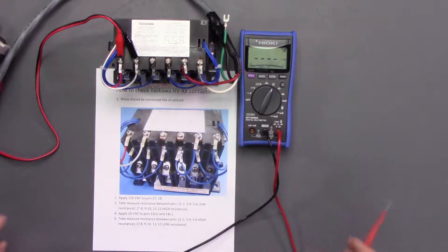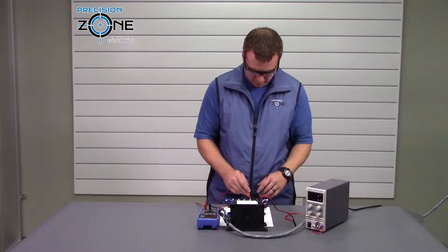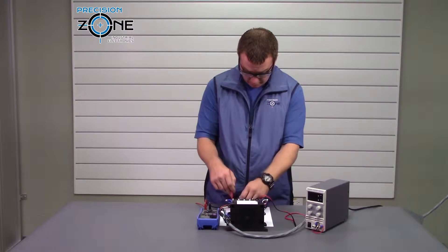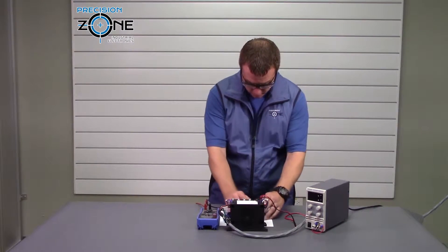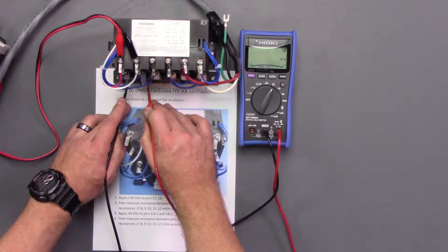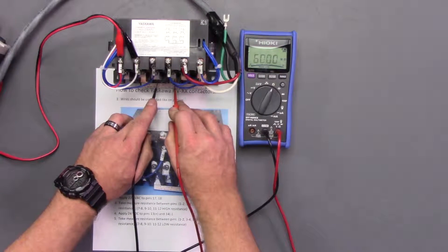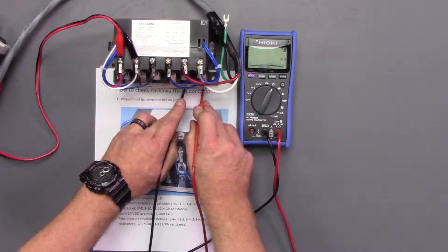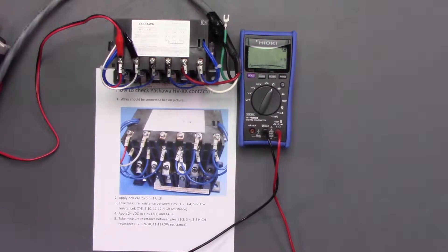Okay, so that's what we're looking for. And then it's asking to check between 7, 8, 9, 10, 11, 12 for high resistance. So we really shouldn't be seeing anything at all. Depending on your meter, you might get a reading, but ours is not reading, which is perfectly fine.